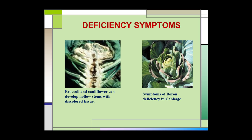As seen in this picture, broccoli and cauliflower can develop hollow stems with discolored tissues. In cabbage, the leaves get damaged.